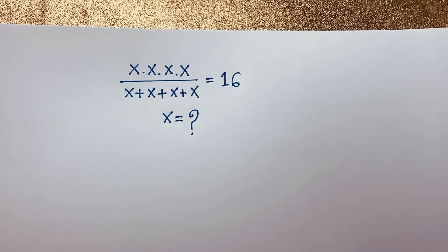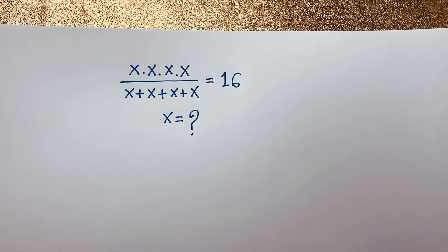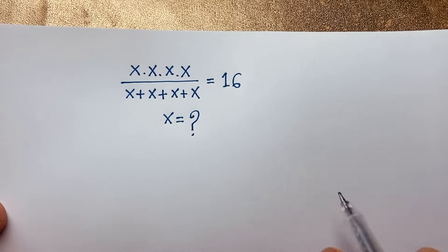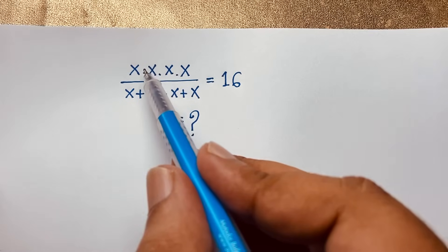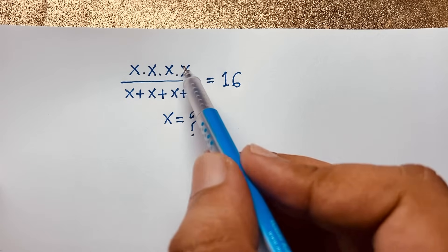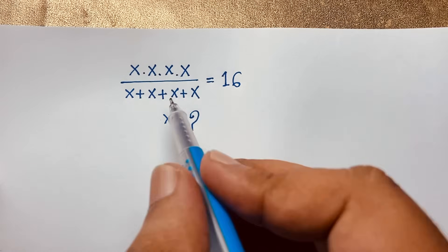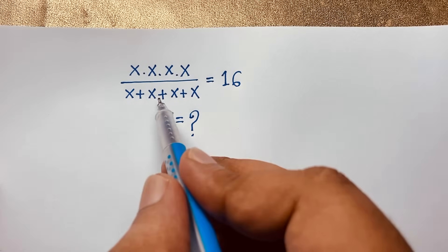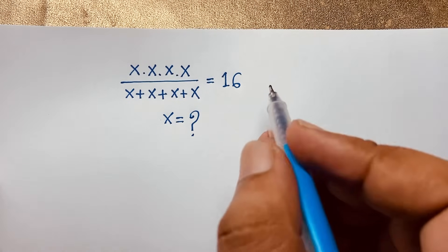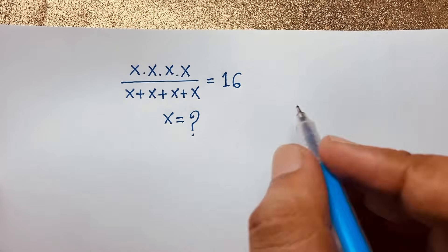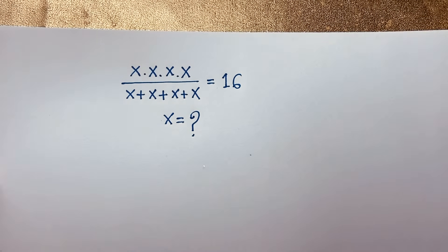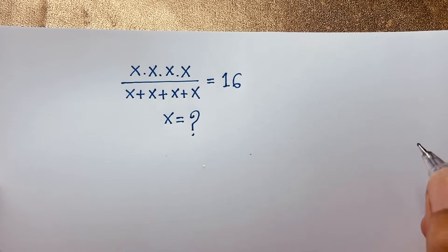Hello everyone, welcome to my YouTube channel. Today we are solving an interesting math Olympiad question. The question is x times x times x times x over x plus x plus x plus x is equal to 16. x is equal to what? How to solve this interesting math problem?